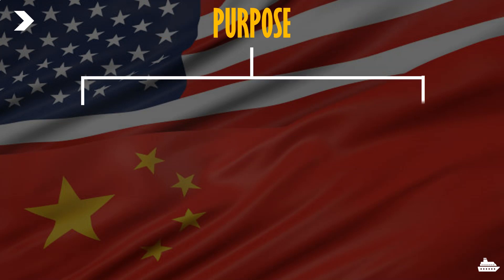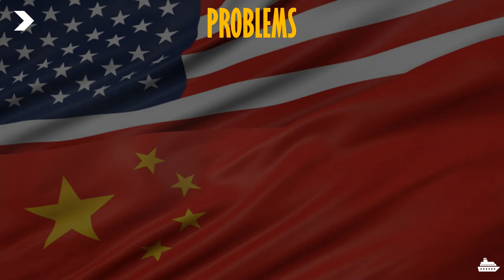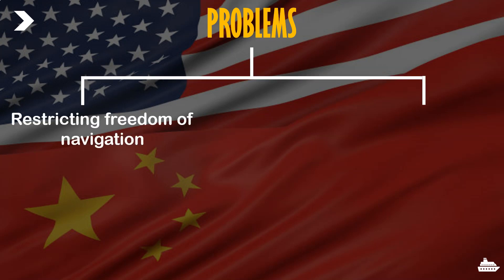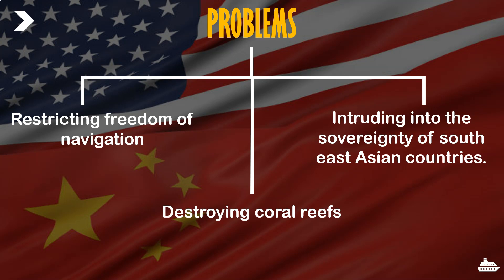The purpose of the artificial islands is twofold: to expand military influence — each artificial island serves as a neo-military base showcasing China's latest advancements — and to increase their territorial sea boundaries. There are several problems caused by this expansion. First, it restricts freedom of navigation. Second, it intrudes into the sovereignty of Southeast Asian countries and is not in line with UNCLOS. Third, it destroys coral reefs, since constructing each artificial island requires excavating these biodiverse-rich coral reef ecosystems. So it's bad for the environment, bad for economies, and bad for sovereignty — killing three birds with one stone in the wrong way.